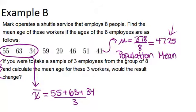And when we do that, we get that the sample mean is 50.67, which is definitely bigger than the population mean.